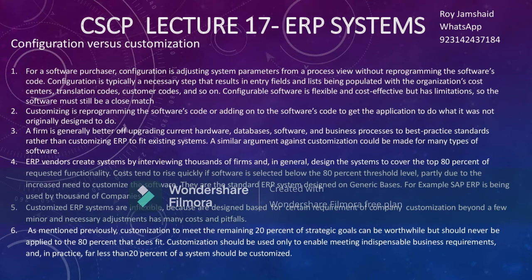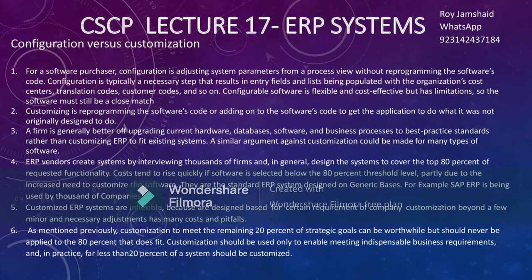When purchasing an ERP for your company, there are important points to consider — also critical for the exam. First: configuration versus customization. Configuration means you purchase an ERP like SAP and you modify your own systems and processes to fit the ERP, rather than modifying the software. You follow the processes defined by the ERP vendor. The reason is that ERP vendors design their systems by interviewing thousands of firms and generally cover the top 80% of required functionality.